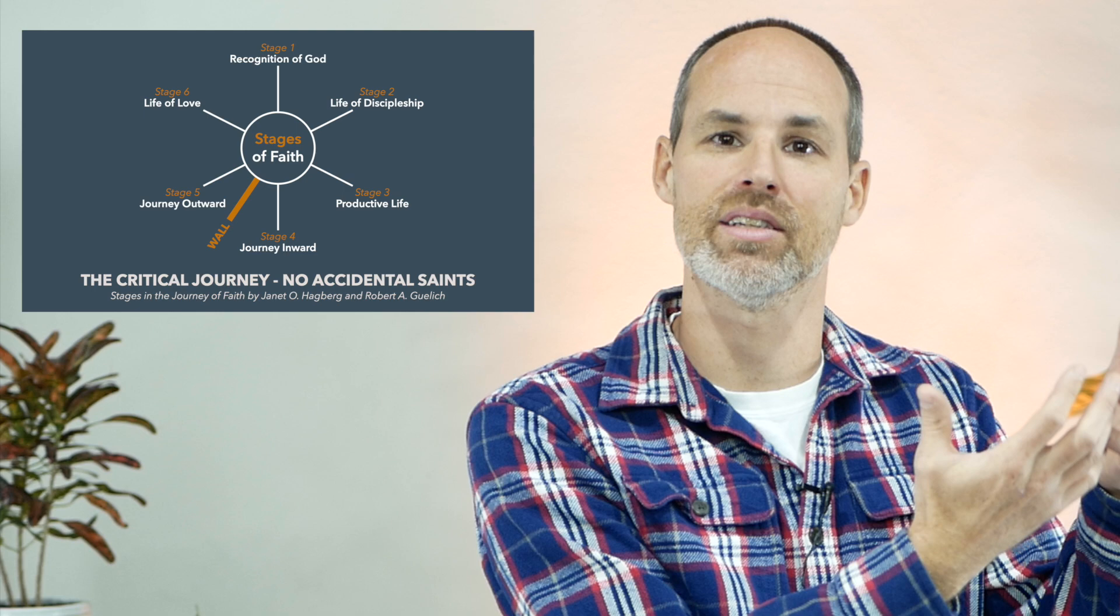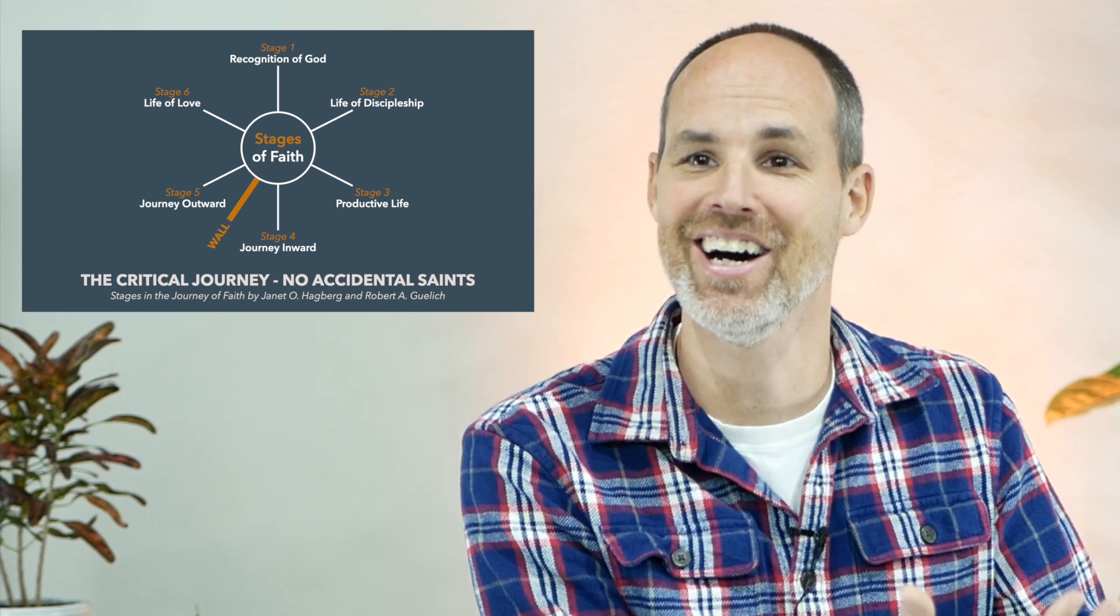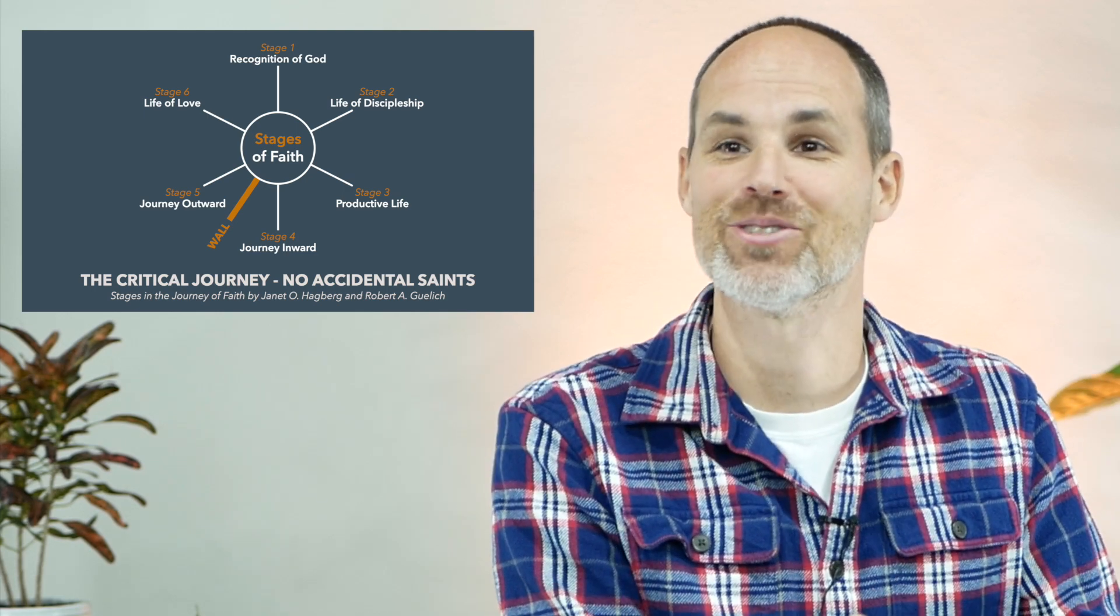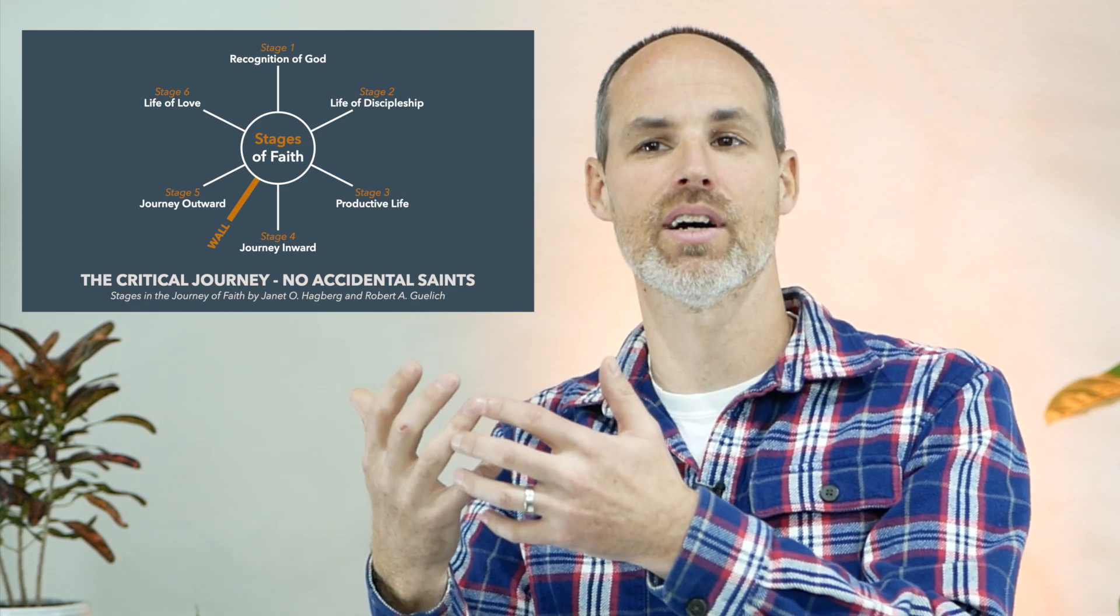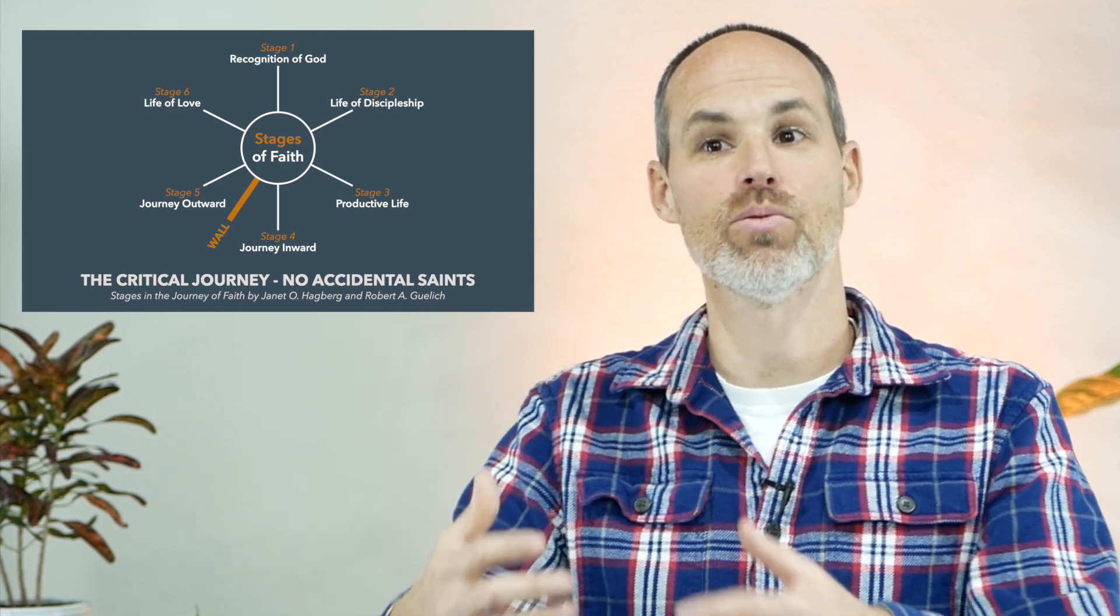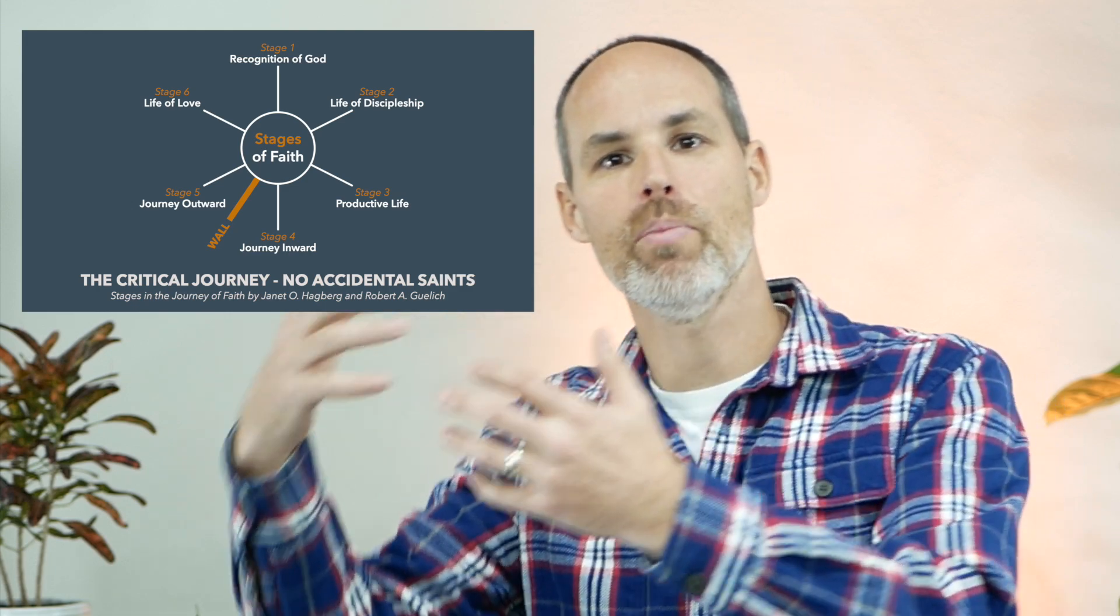And then stage six is called life of love. And that is just where we are becoming more and more people of love. So that's kind of the journey, but the cyclical part is soon we realize that it's not like we become the next degree of people of love and then we can just do it by ourselves from then on.